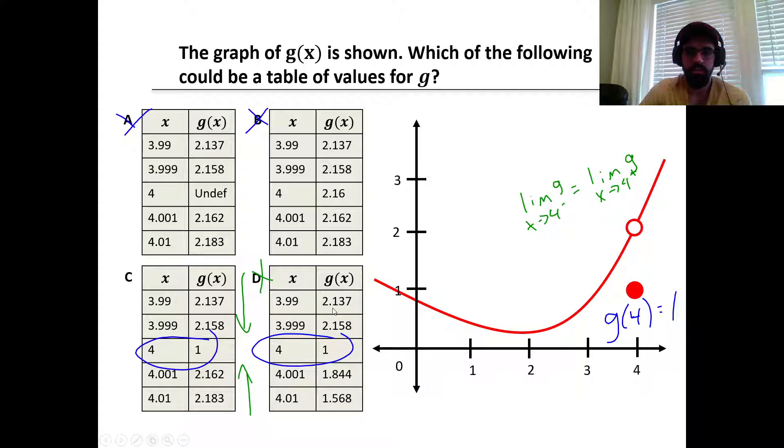So we want to see, does the limit as x approaches 4 from the right also approach those same values? And we see in table C that we get something that is very close to 2.158, or at least it's a lot closer than 1.844.